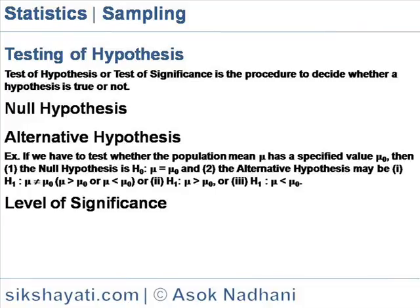Alternative Hypothesis. An alternative hypothesis is denoted by symbol H1. The two hypotheses, H0 and H1, are such that if one is true, the other is false and vice versa.